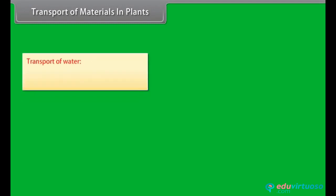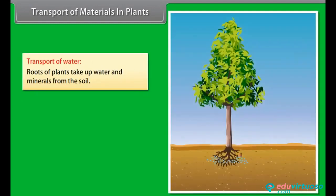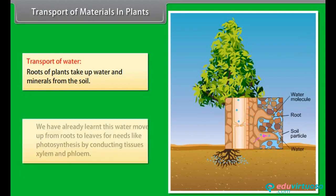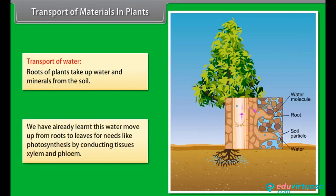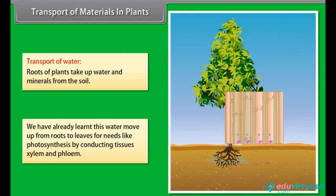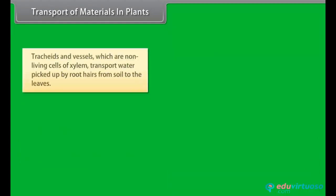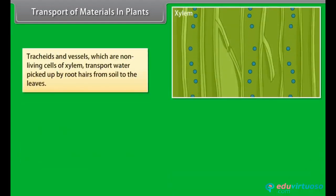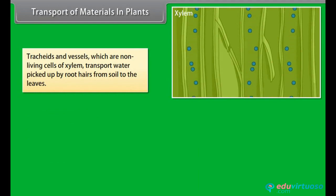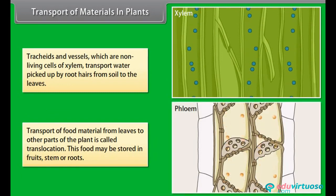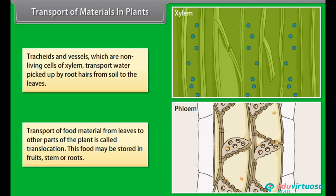Transport of materials in plants: roots of plants take up water and minerals from the soil. Water moves up from roots to leaves for photosynthesis by conducting tissues — xylem and phloem. Tracheids and vessels, which are non-living cells of xylem, transport water picked up by root hairs from the soil to the leaves. Transport of food material from leaves to other parts of the plant is called translocation. This food may be stored in fruits, stem or roots.